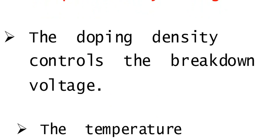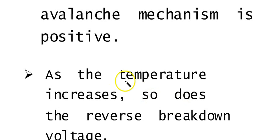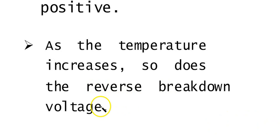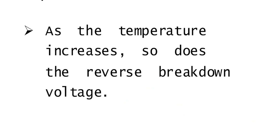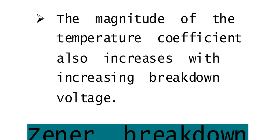One important thing: the temperature coefficient of the avalanche mechanism is positive. This means that as the temperature increases, the reverse breakdown voltage also increases. So if the temperature is high, the reverse breakdown voltage will be high. The magnitude of the temperature coefficient also increases with increasing breakdown voltage, because different materials have different breakdown voltages, and the temperature coefficient depends upon the magnitude of the breakdown voltage.